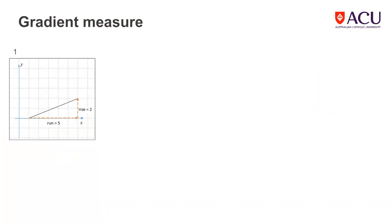In the first graph, to go from the start point to the end point, we must go 5 units along and then 2 units up. Evaluating the rise over the run gives a value of 2 fifths or 0.4 for the gradient.